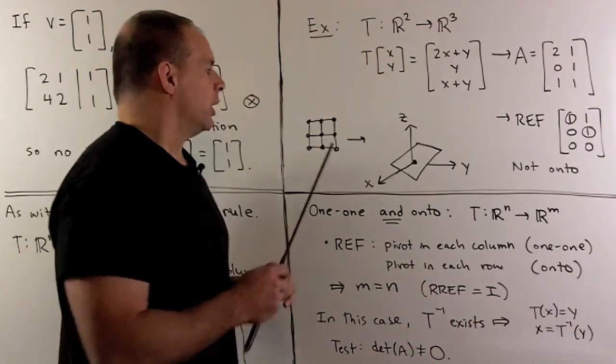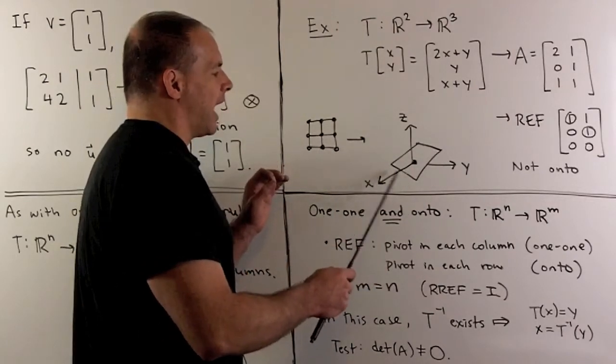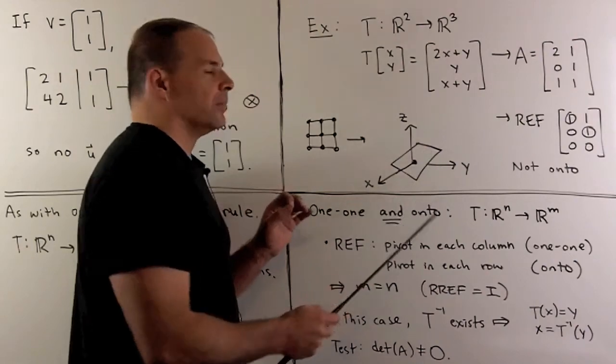For the picture, taking our plane, then we're just going to map it into R3 as a plane through the origin. So we're not going to hit every point in R3, so not onto.